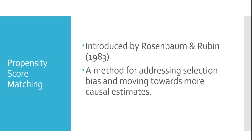By way of history, propensity score matching has been around since the early 1980s and has grown periodically more popular over the last several decades as a method for addressing selection bias and moving us towards more causal estimates. One of the primary problems faced when using observational data is that of omitted variable bias or selection bias — that individuals who experience a certain treatment often vary from individuals that don't in systematic ways that haven't been accounted for, and therefore bias our estimates of the treatment. Propensity score matching can be thought of as a step that goes beyond just regression with controls to try to address selection issues more coherently.